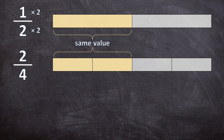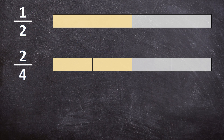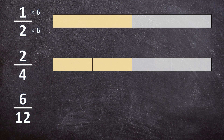Now let's take the first fraction again and multiply with something else. This time let's multiply the numerator and the denominator by six. To find an equivalent fraction, you can multiply the numerator and the denominator by anything, as long as you multiply the numerator and the denominator by the same number. So I just randomly chose six.